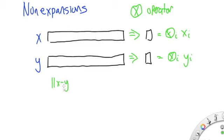we'll say the distance between them is the maximum over all component positions of the difference between x and y at those positions.